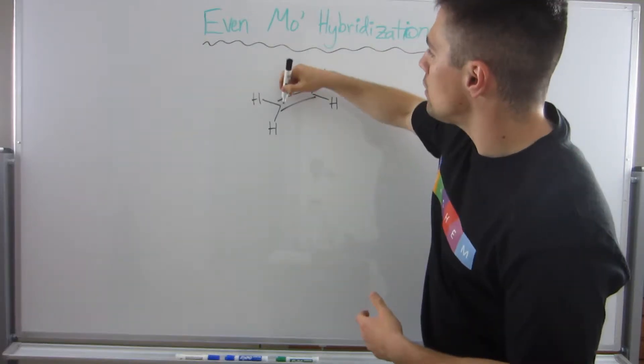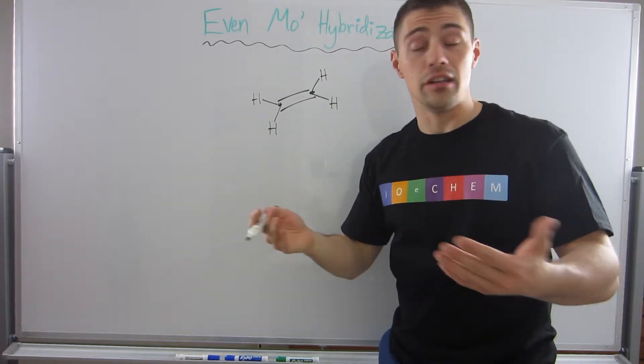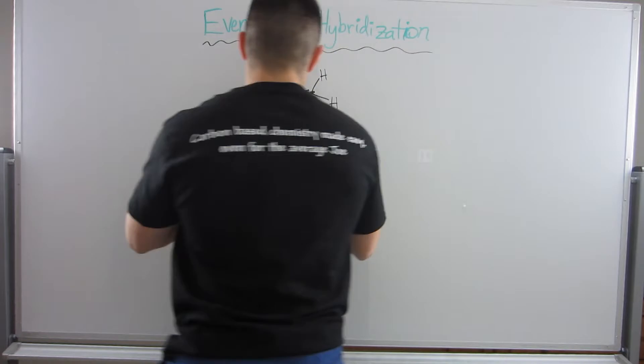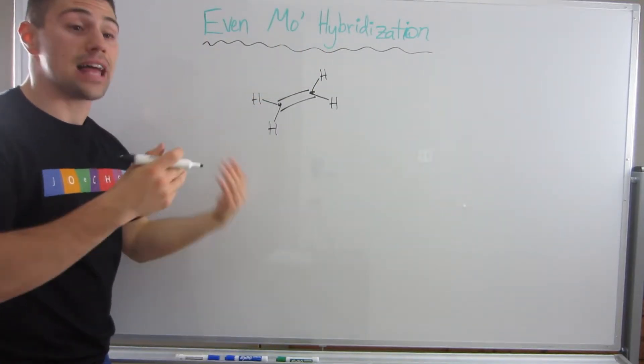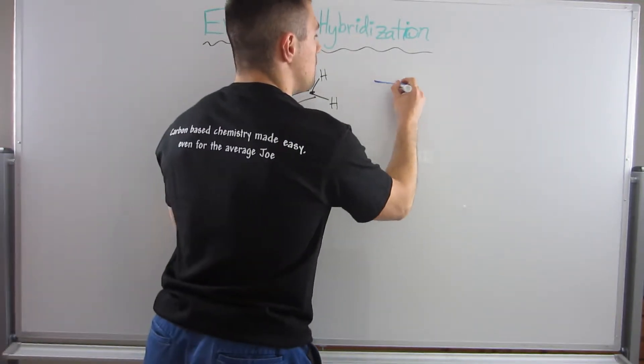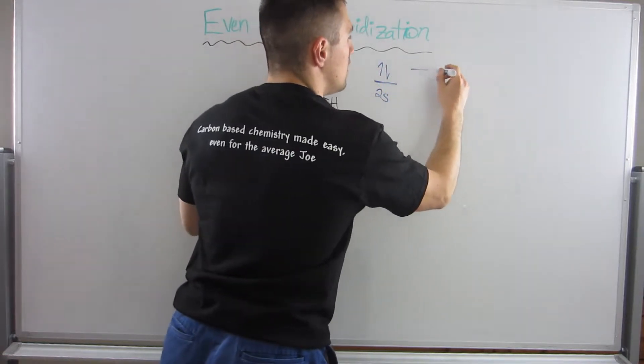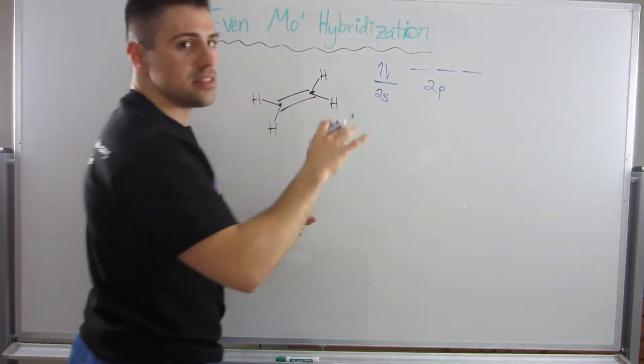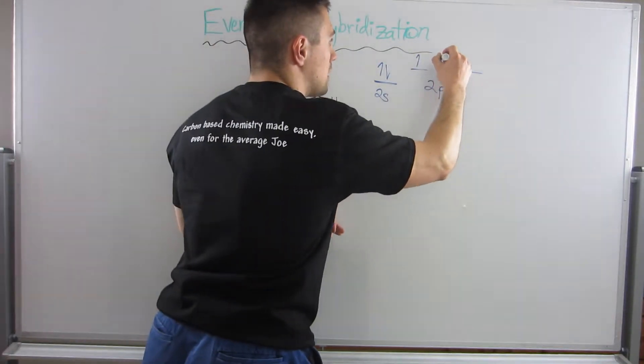If I look at this carbon, actually both of them because they're equivalent, I want to assign some hybridization. Let's rehash quickly what we did in the last video. Carbon has a valence shell with a 2s shell that has two electrons in it and three 2p shells—the px, py, and pz. There are two electrons here.